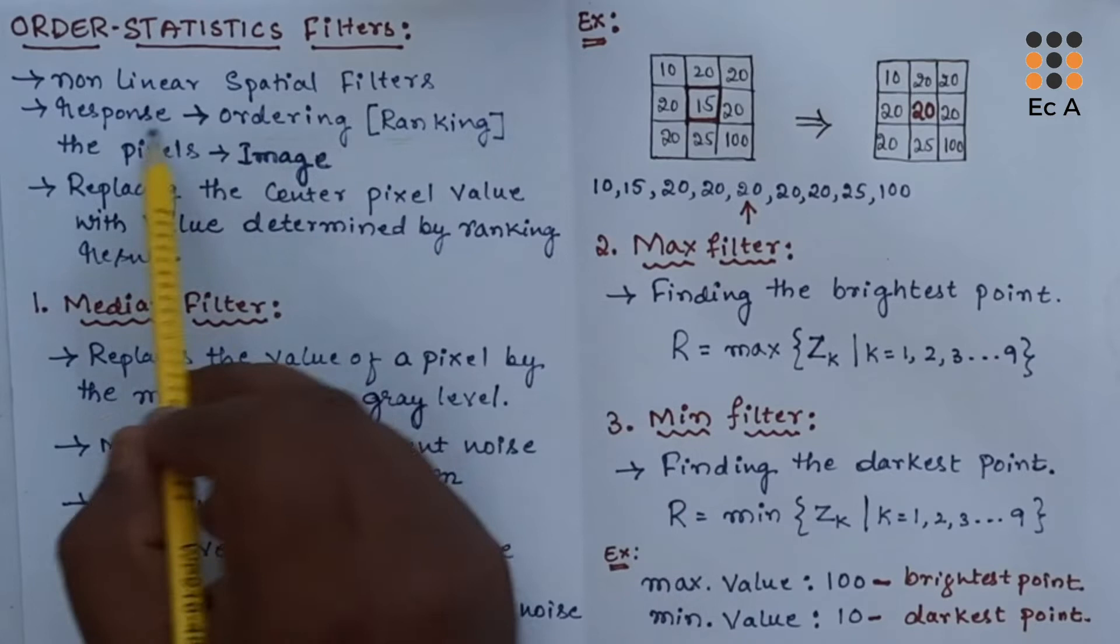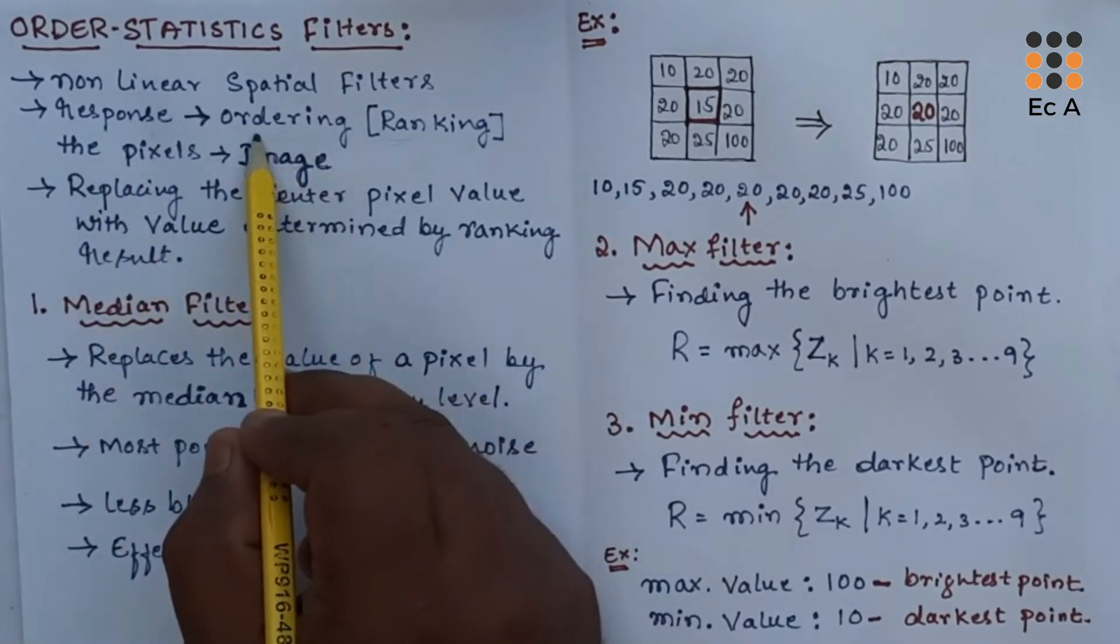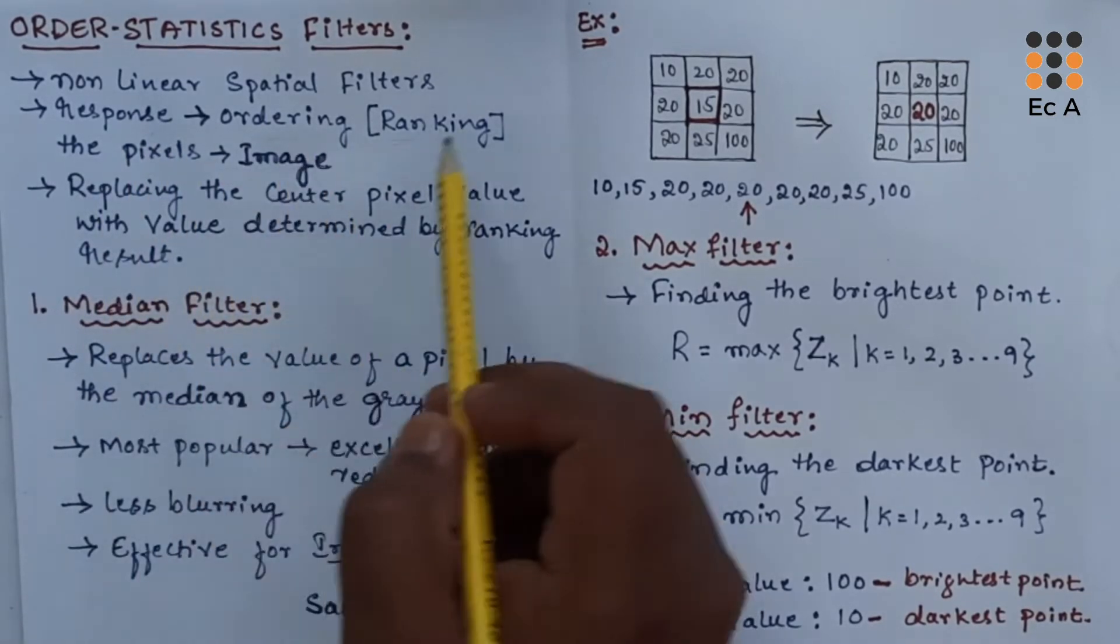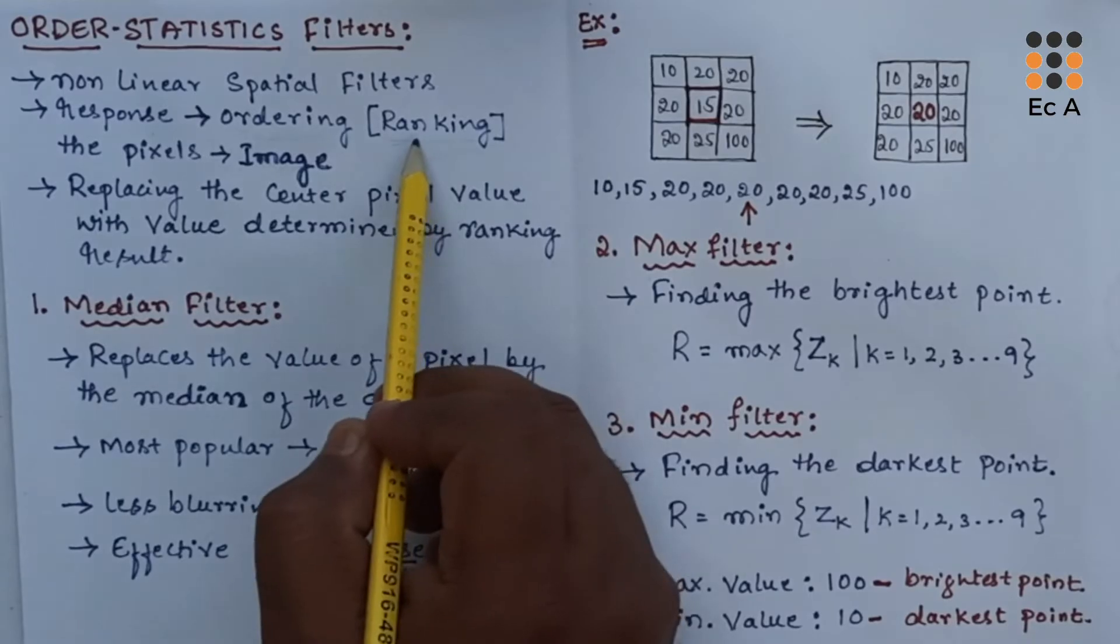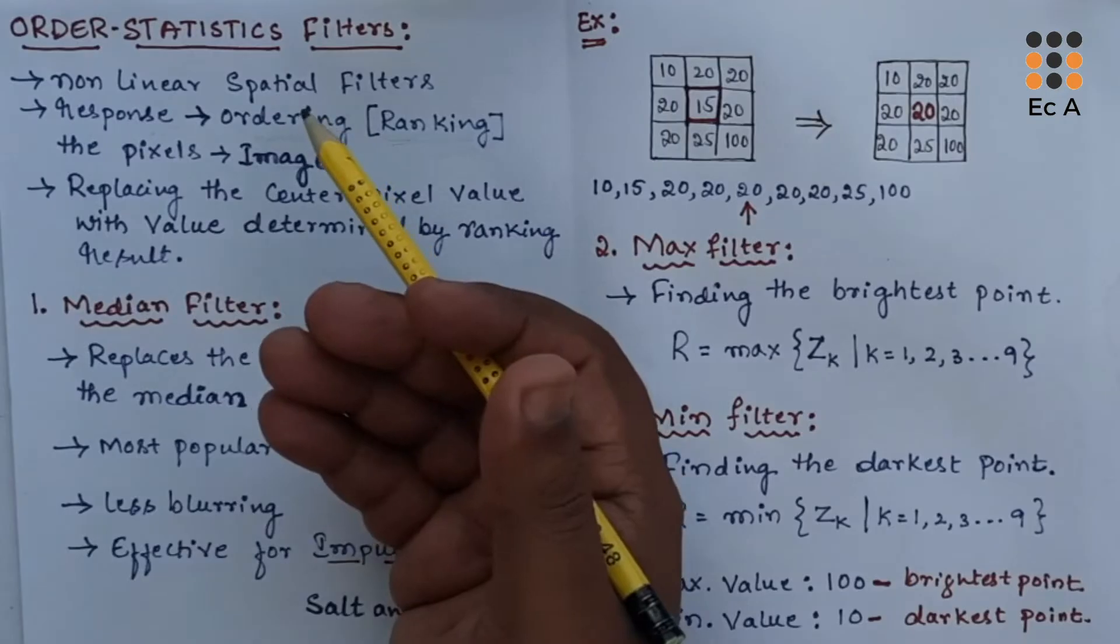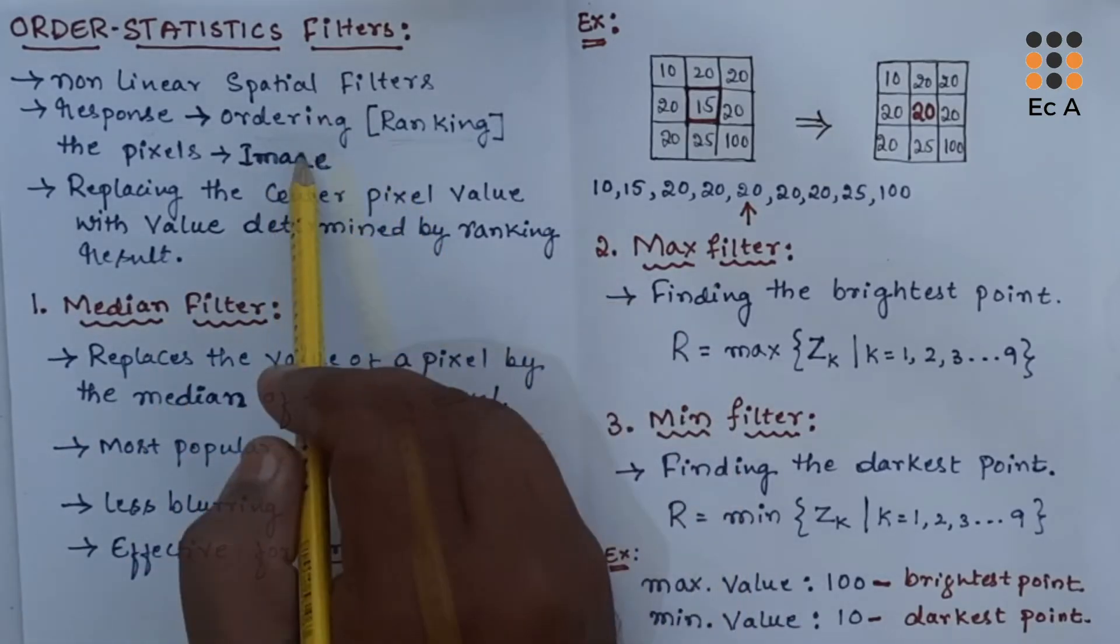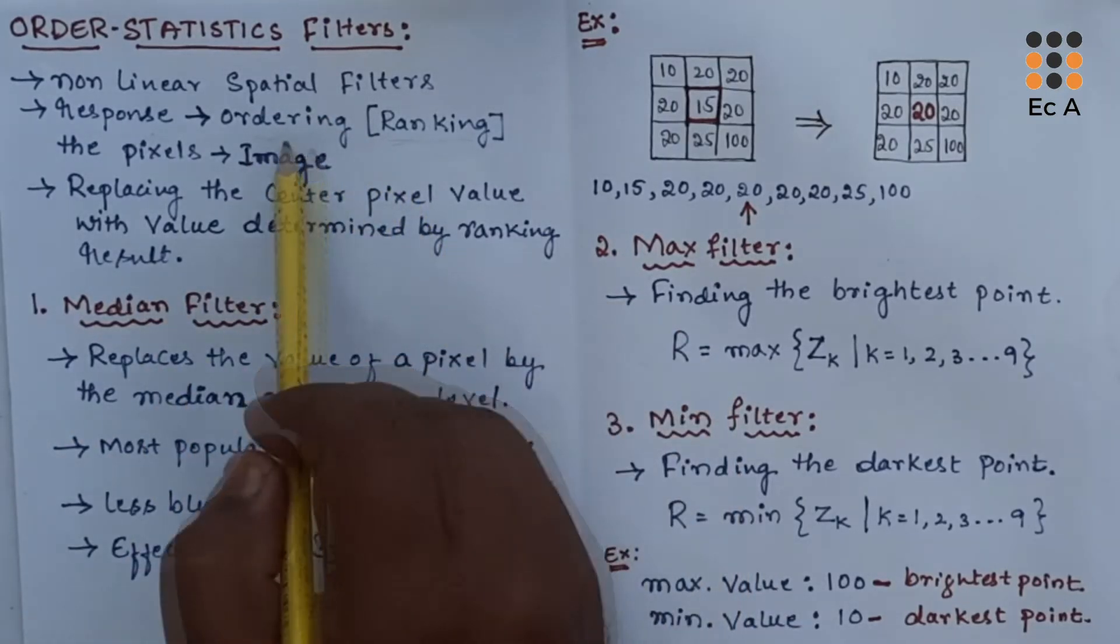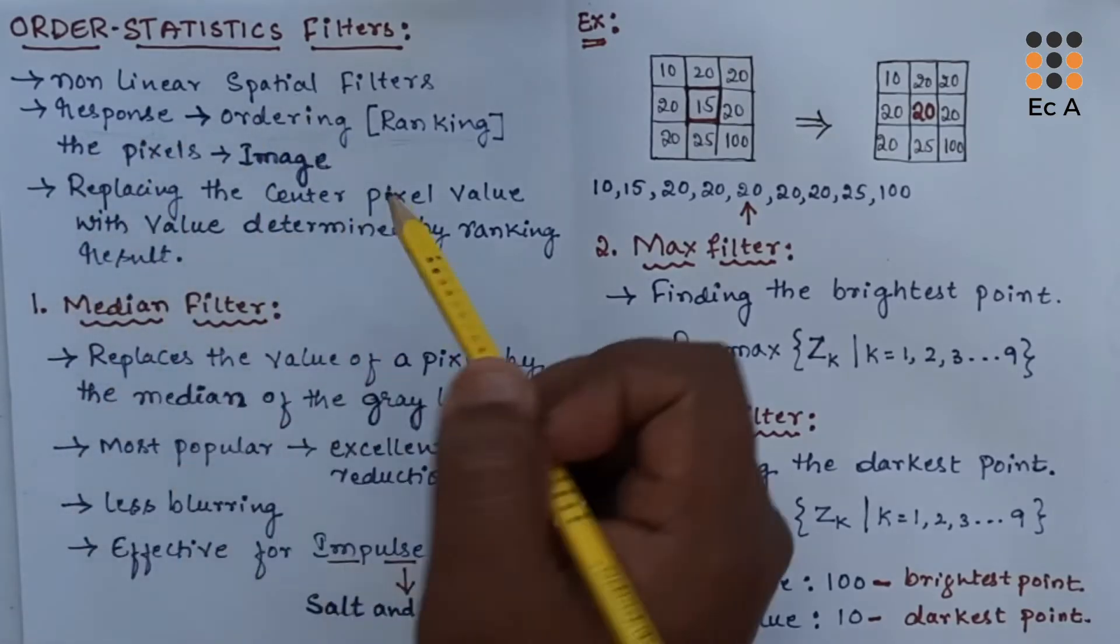In nonlinear filters, the response of the filter depends upon the order of the pixels or ranking of the pixel. For example, if we take the pixels and arrange them in ascending order or descending order, depending upon that order, we will have the response of the filter.